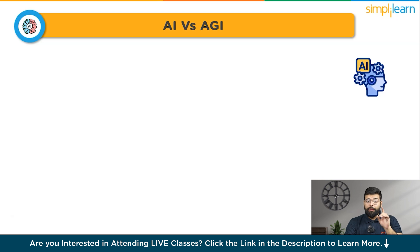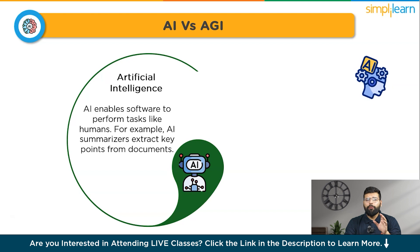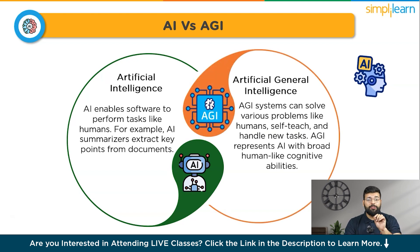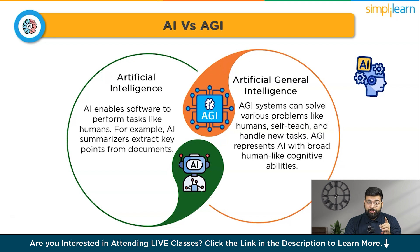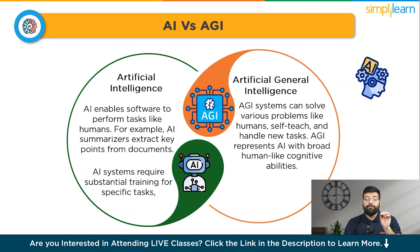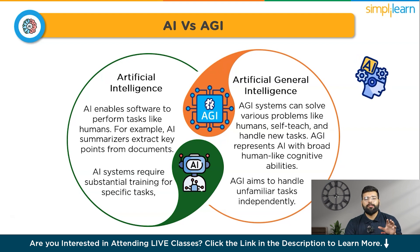Let's understand the difference between artificial intelligence and artificial general intelligence. AI enables software to perform tasks at human-level performance, often excelling in specific areas, like AI summaries that extract key points from documents. In contrast, AGI systems can solve problems across multiple domains like a human, without manual intervention — self-teaching and handling tasks they weren't initially trained for. AGI is a theoretical representation of comprehensive AI with generalized human cognitive abilities, whereas today's AI systems require substantial training for specific tasks, unlike AGI which aims to handle unfamiliar tasks independently.